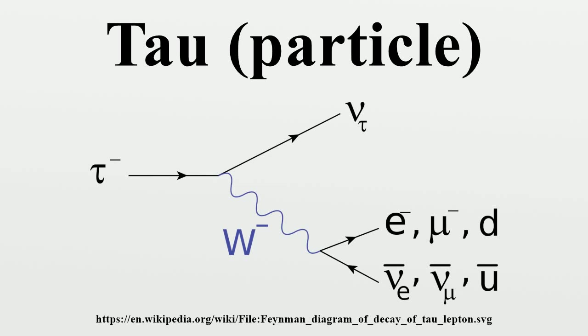Together with the electron, the muon, and the three neutrinos, it is a lepton. Like all elementary particles with half-integral spin, the tau has a corresponding antiparticle of opposite charge but equal mass and spin, which in the tau's case is the anti-tau. Tau particles are denoted by tau minus and the anti-tau by tau plus.